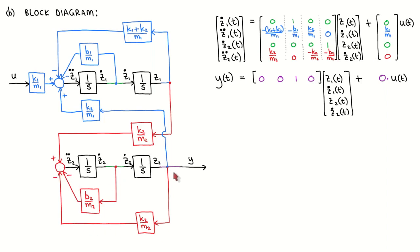This block diagram is now a faithful representation of the state variable model. Note that the block diagram is not unique — your block diagram might still be a correct representation of the model but differ from mine in certain places. One purpose of block diagrams is to give us insight into the dynamics of a system that would be difficult to see from the state variable equations alone. In our block diagram, the top part depicts the dynamics of the blue object and the bottom part depicts the dynamics of the red object. We can now clearly see how the input influences the system, how the states influence each other, and how they influence the output.